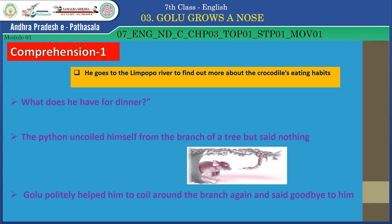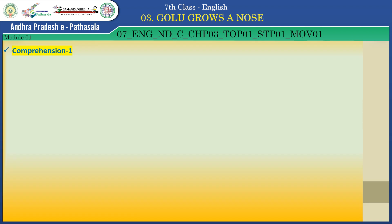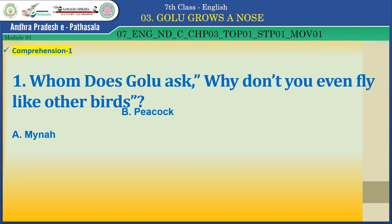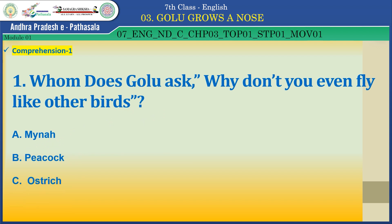Let's check our comprehension. Whom does Golu ask, 'Why don't you fly like other birds?' A. Myna, B. Peacock, C. Ostrich. Yes, the answer is C — Ostrich. Well done, children! You have done a great job.